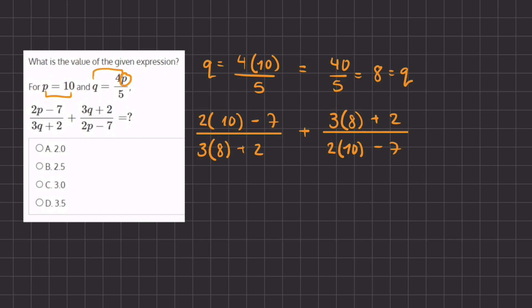All right, so now let's go ahead and simplify. In our first fraction, our numerator is going to be 2 times 10, which is 20, minus 7, which is 13. And in our denominator, we have 3 times 8, which is 24, plus 2, which gives us 26.